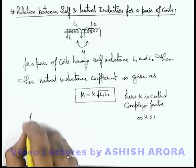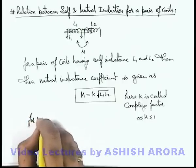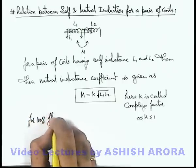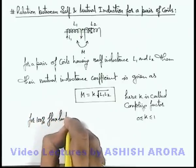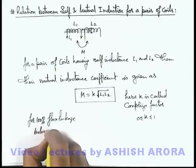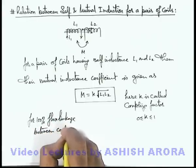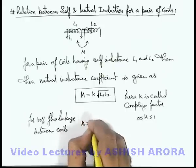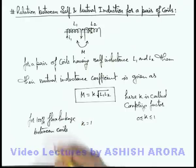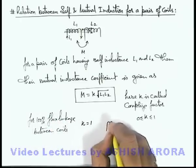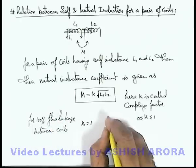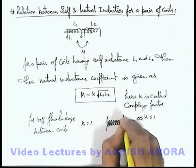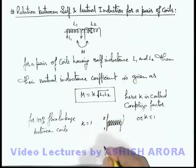So here we can write for hundred percent flux linkage between coils, we can write the value of k is equal to one. And hundred percent flux linkage implies this will happen only when one coil is wound over the other coil.